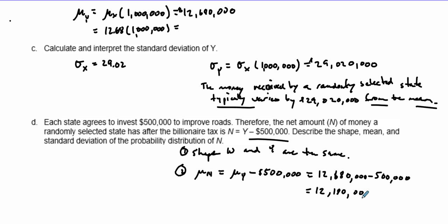For the standard deviation, the standard deviation of N is simply the standard deviation of Y. We do not subtract any values - those are only effective when we multiply. So our standard deviation remains the same as the previous one at 29.02 million.